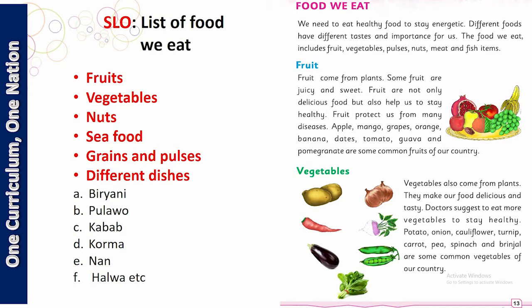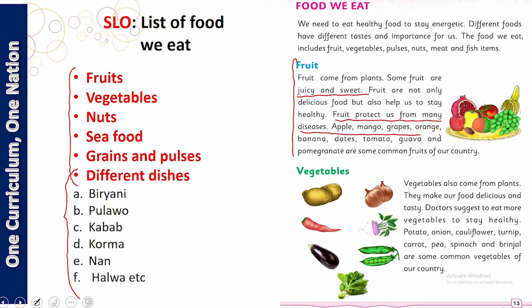Can you tell me why do we eat fruits? What are the benefits of fruits? We eat them because they are delicious, juicy, and sweet. If we eat fruits, they protect us from many diseases. Apple, mango, grapes, orange, banana, dates, and pomegranate are some common fruits of our country.